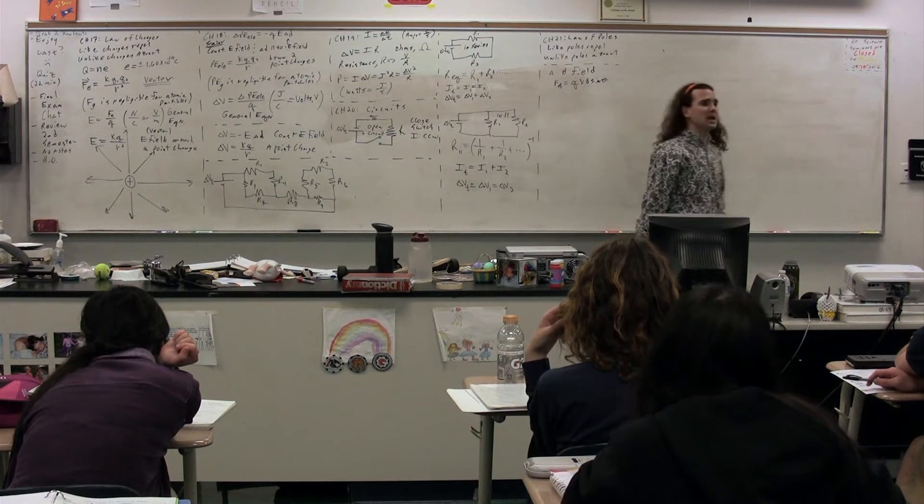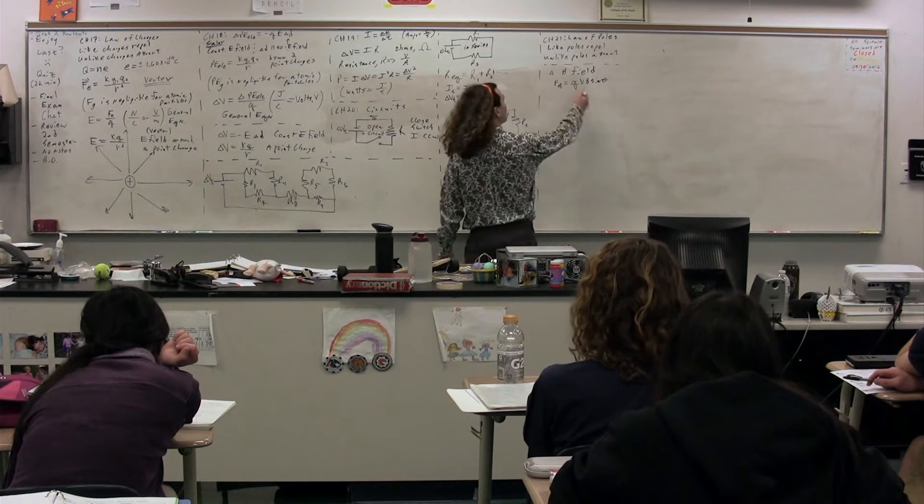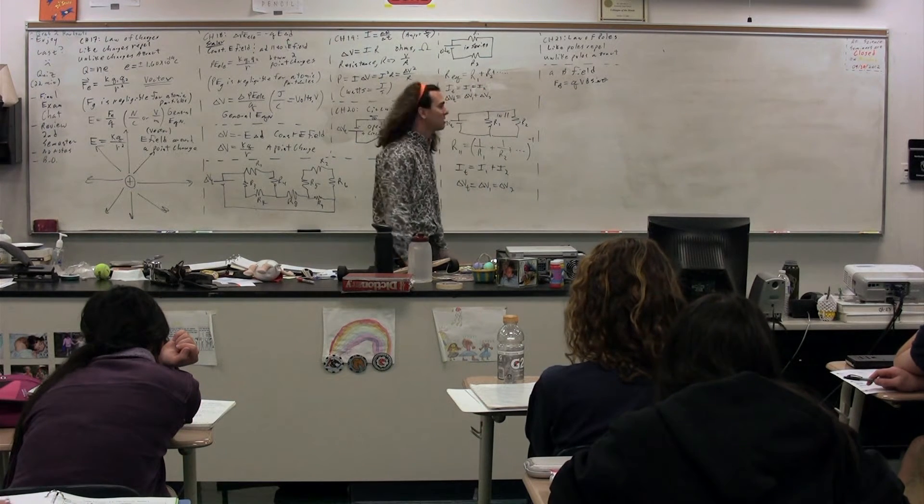What if theta the angle between in this equation? The velocity and the magnetic field. The two vectors, the velocity and the magnetic field.